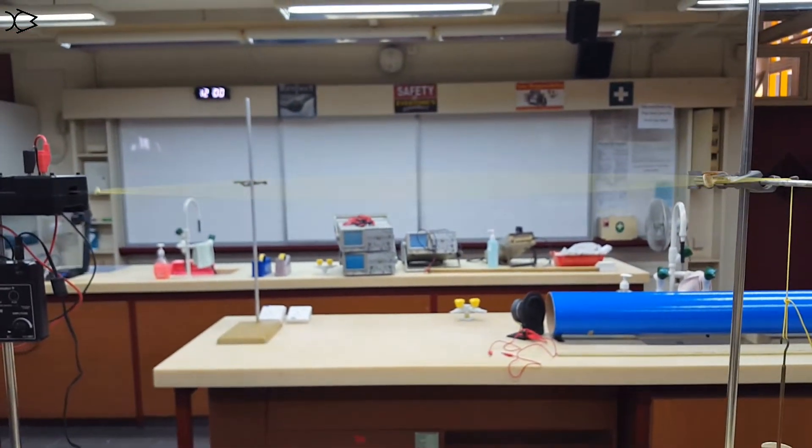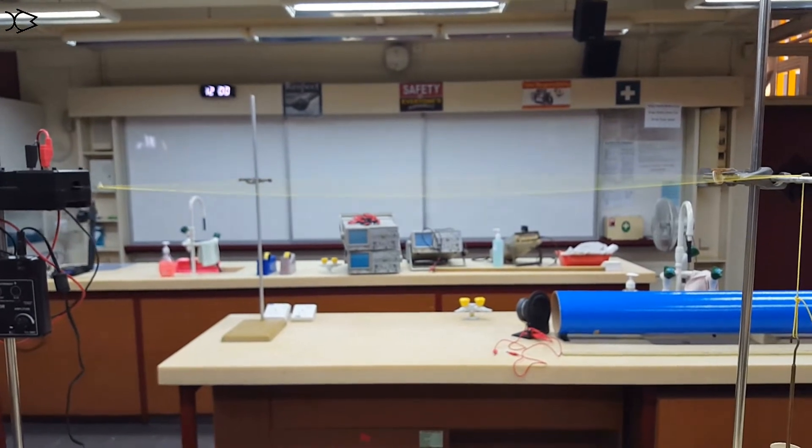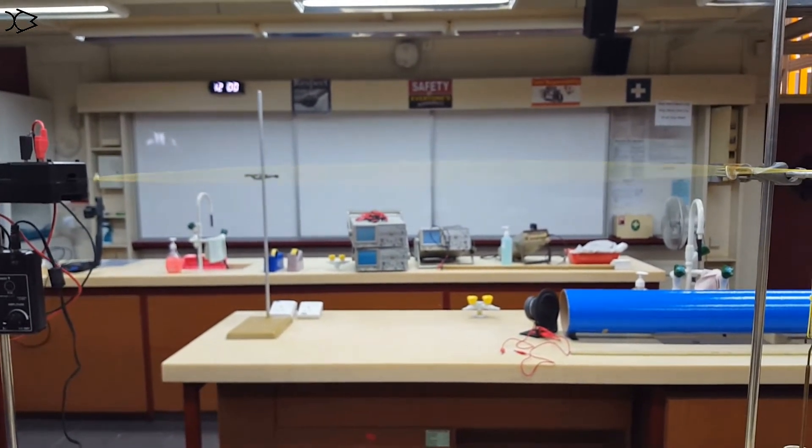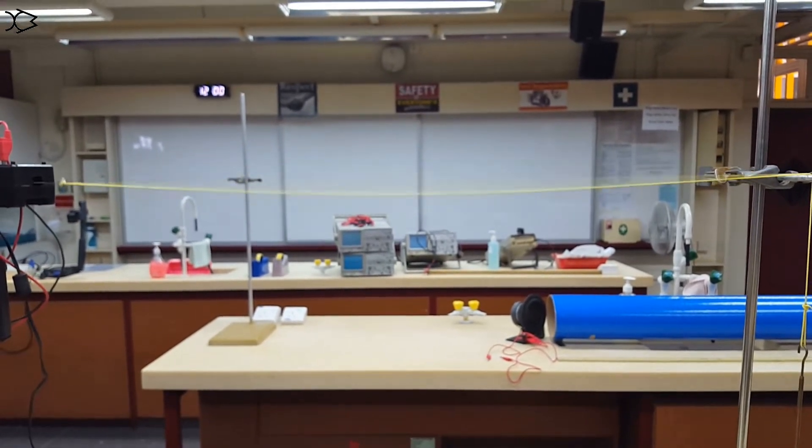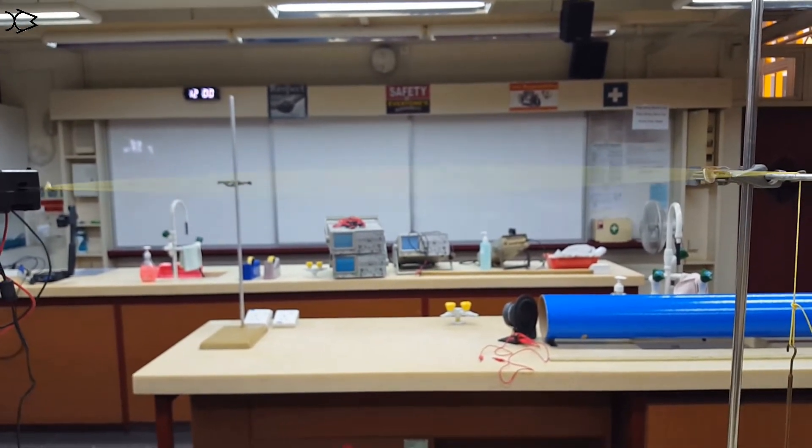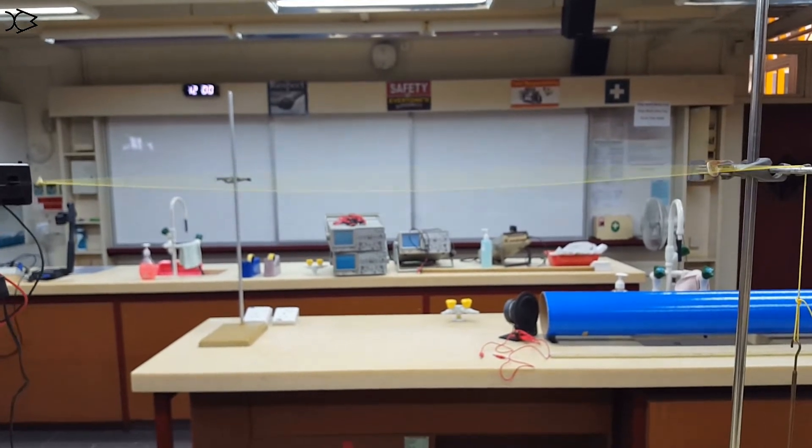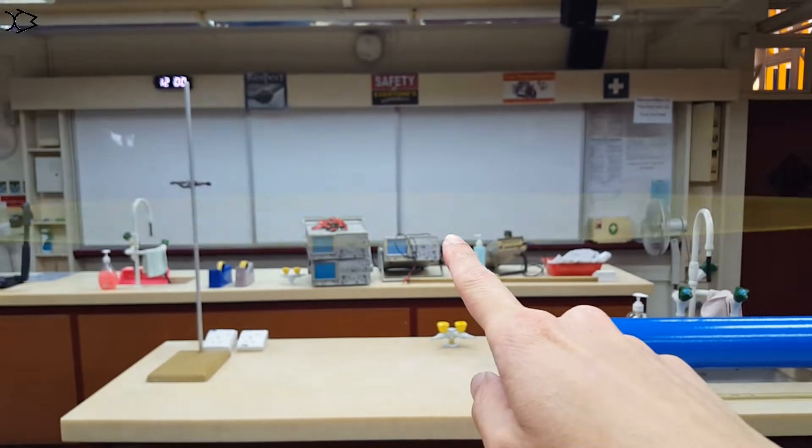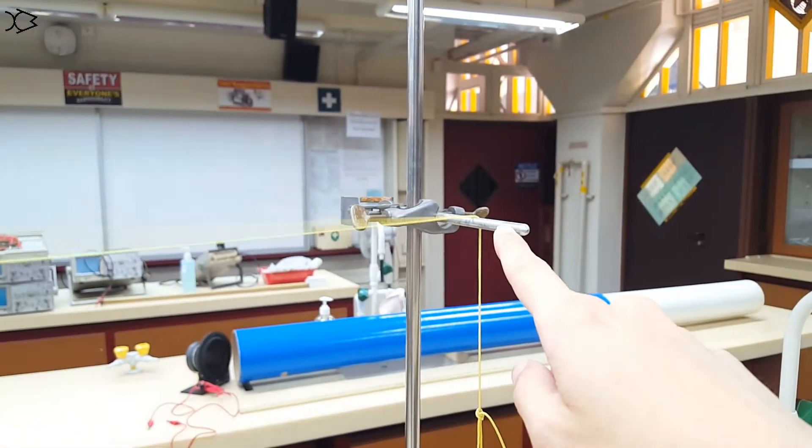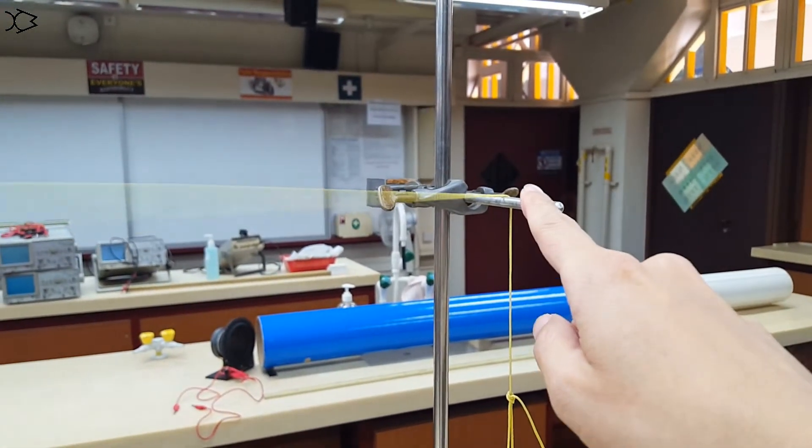And that will give us a standing wave with a very large amplitude like this one. So this one is called the fundamental. It's the longest standing wave that can resonate on this string. So we have a node at this end, antinode at the middle, and a node at the end here.